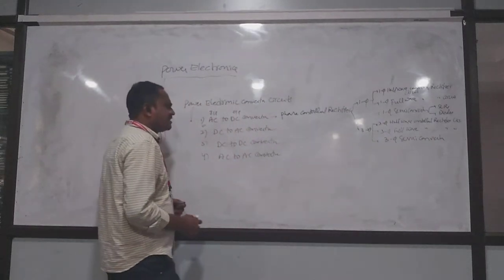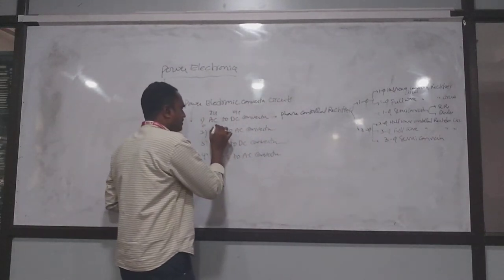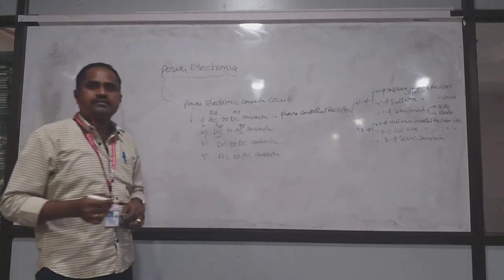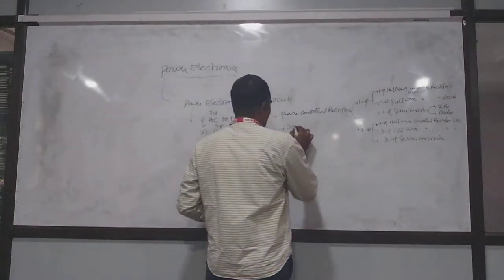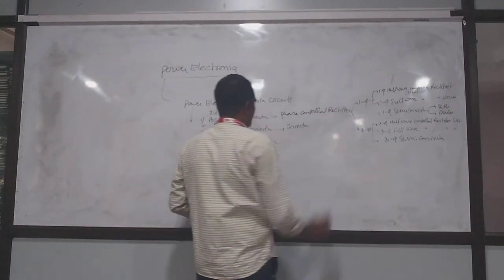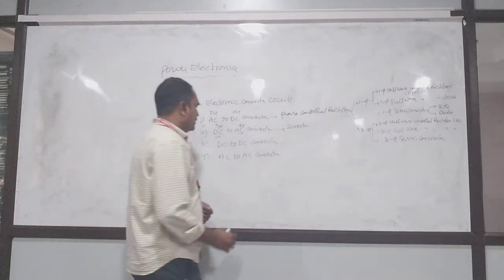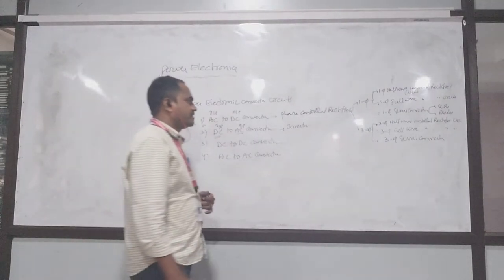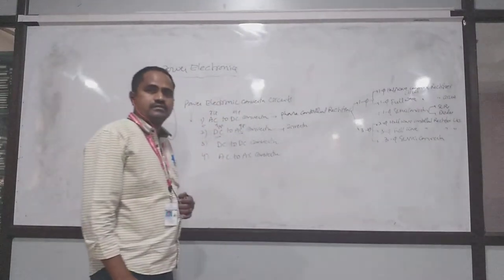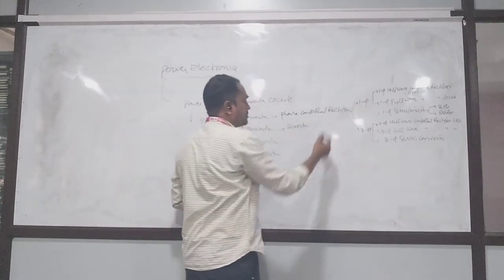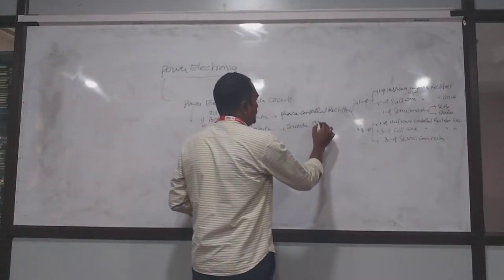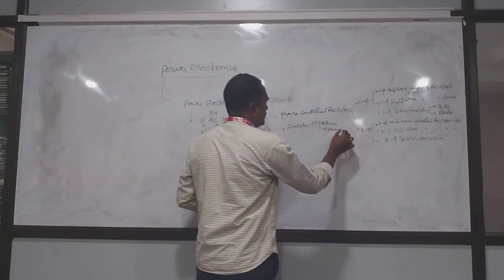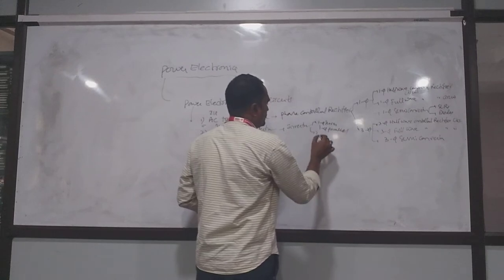Next, DC to AC converter: here the input is DC and output is AC. This DC to AC converter is also called an inverter. The classification includes single phase inverter — with series inverter and parallel inverter — and three phase inverter.